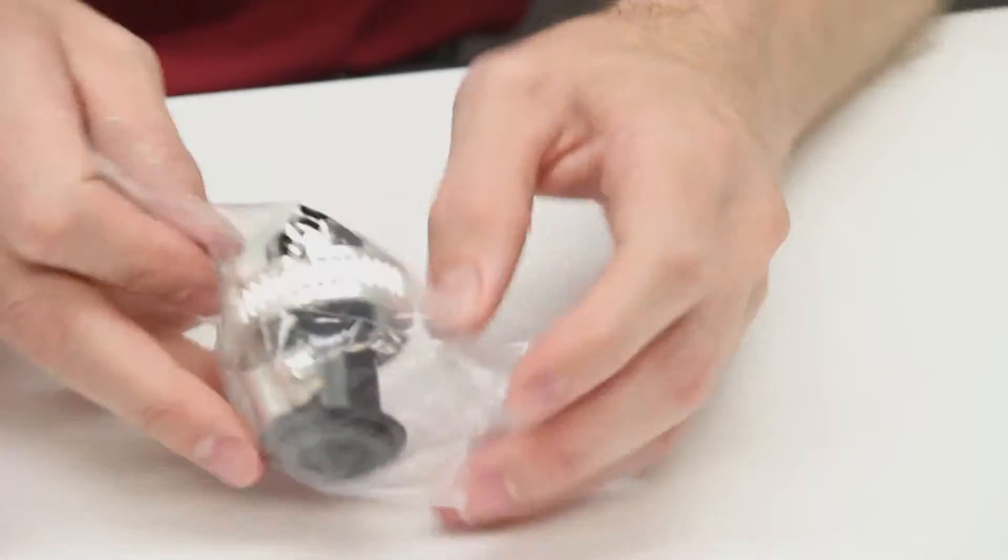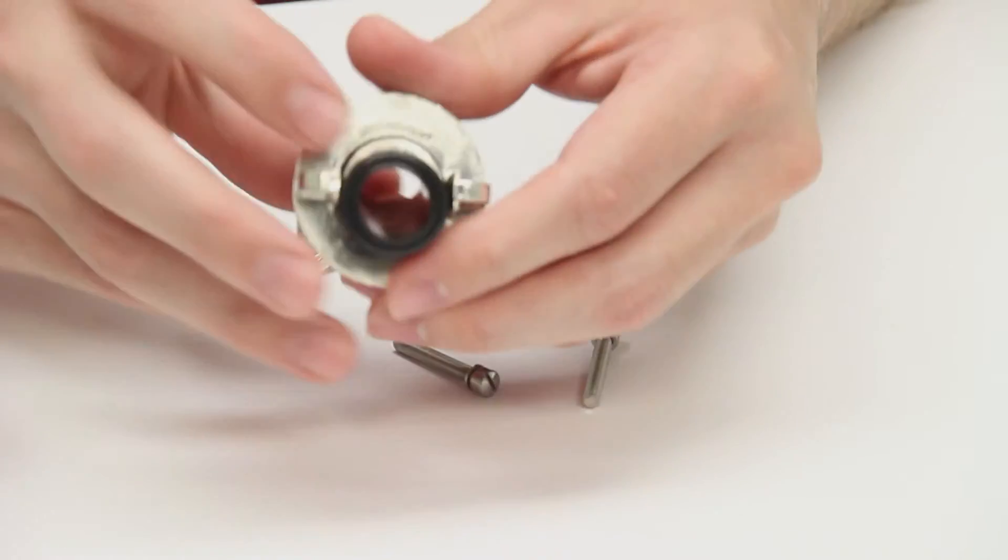Let's get started by removing the parts from the bag. First, you'll want to slide the rubber strain relief into place.